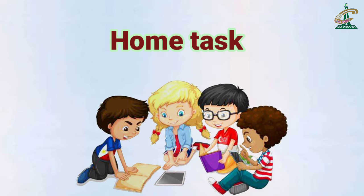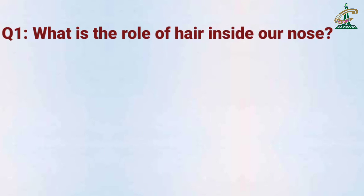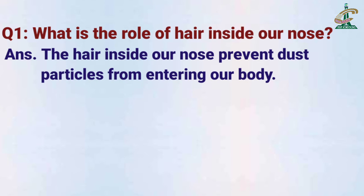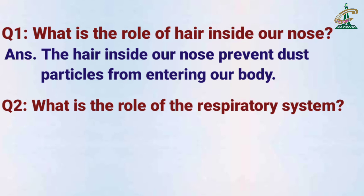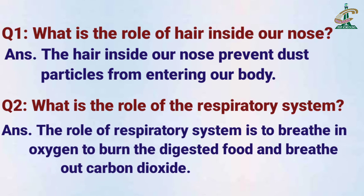Now students, it's time for your home task. I'm assigning you two questions to memorize. Question number one: What is the role of hair inside our nose? Answer: The hair inside our nose prevents dust particles from entering our body. Question number two: What is the role of the respiratory system? Answer: The role of the respiratory system is to breathe in oxygen, to burn digested food, and to breathe out carbon dioxide. Memorize these two questions well at home.